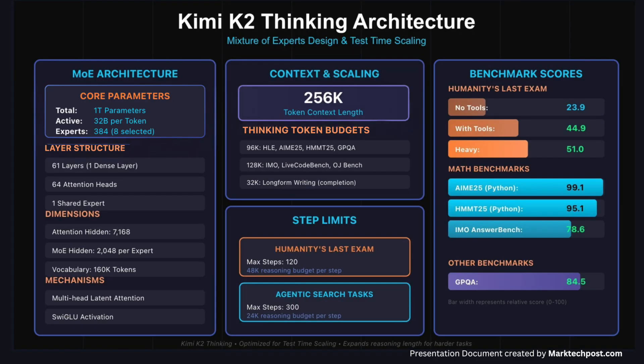Kimi K2 Thinking inherits the Kimi K2 mixture of experts design. The model uses a MoE architecture with 1 trillion total parameters and 32 billion activated parameters per token. It has 61 layers including one dense layer, 384 experts with 8 experts selected per token, one shared expert, 64 attention heads, and an attention hidden dimension of 7168. The MoE hidden dimension is 2,048 per expert, the vocabulary size is 160,000 tokens, the context length is 256,000, the attention mechanism is multi-head latent attention, and the activation function is SwiGLU.